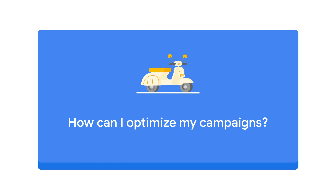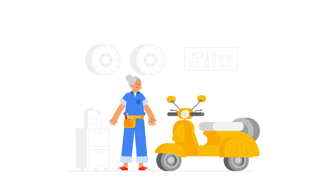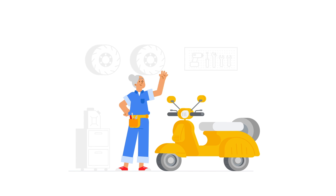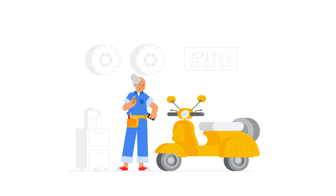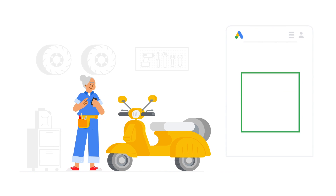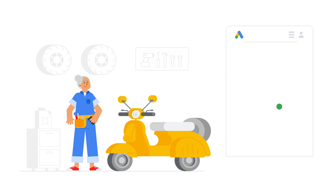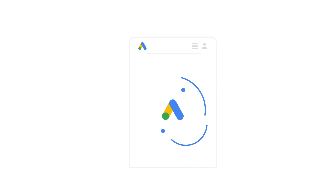How can I optimize my campaigns? Smart campaigns are designed to be as quick and simple to set up as possible. They also improve over time, as Google Ads understands more about the customers clicking on your ads. However, there are things you can do to help them work even better for you.